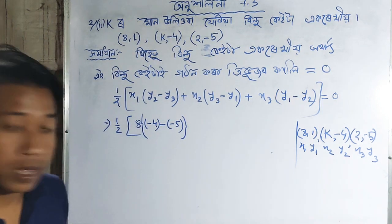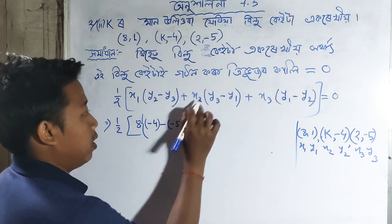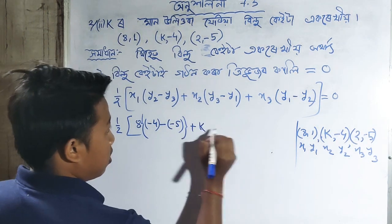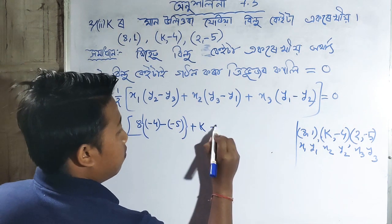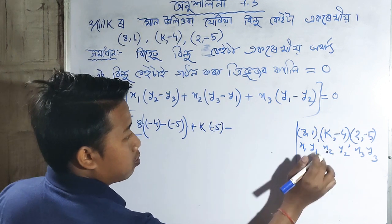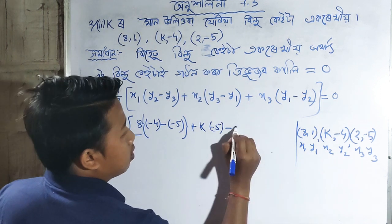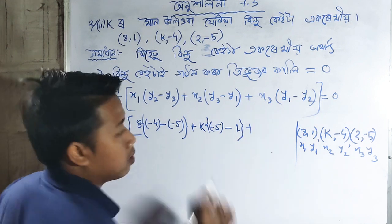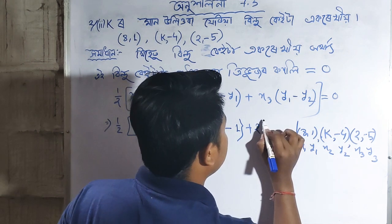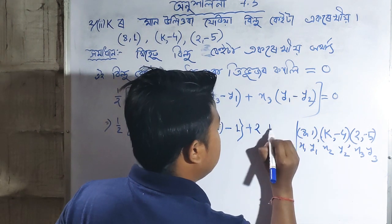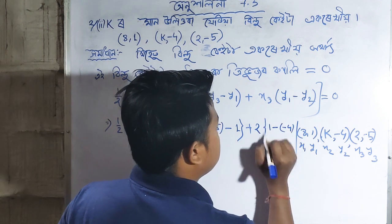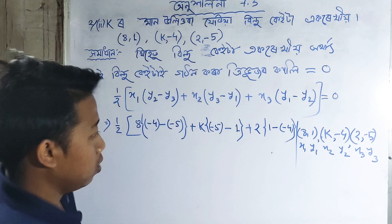Continuing the expansion: plus x3(y1-y2) which is 2 times (1 minus -4). So we have 2 times (1 minus -4) equals 2 times 5. Now we can simplify each term.